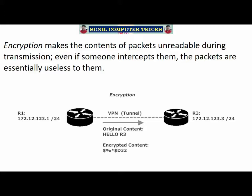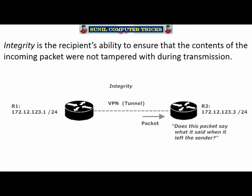Encryption makes the contents of the packets unreadable during transmission, so even if a man-in-the-middle attack occurs or someone intercepts them, the packets are essentially useless — like stealing a book written in a language you can't read. Integrity is also done on the recipient's end: it's the recipient's ability to ensure that the contents of the incoming packet were not tampered with during transmission. Router 3 is essentially asking: does this packet say what it said when it left the original sender? These are three great features to have.